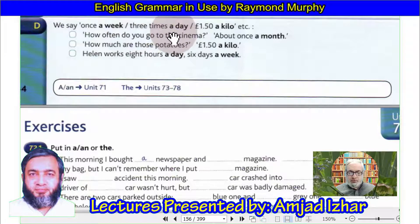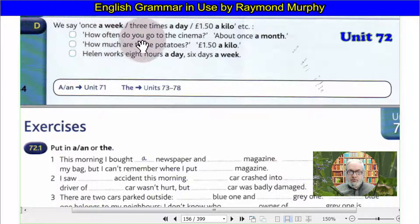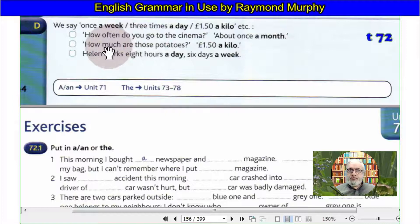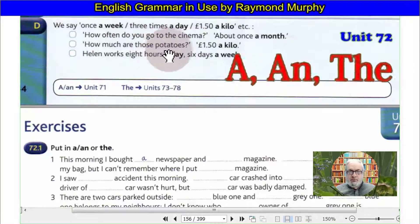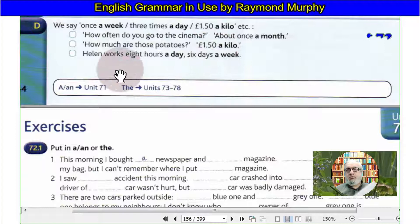Rate expressions use A: 'three times a day,' '£1.50 a kilo.' 'How often do you go to the cinema?' — 'About once a month.' 'How much are those potatoes?' — '£1.50 a kilo.'